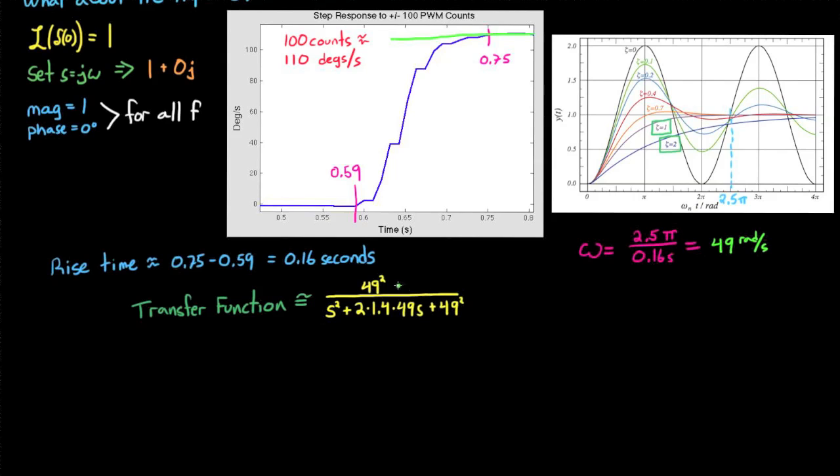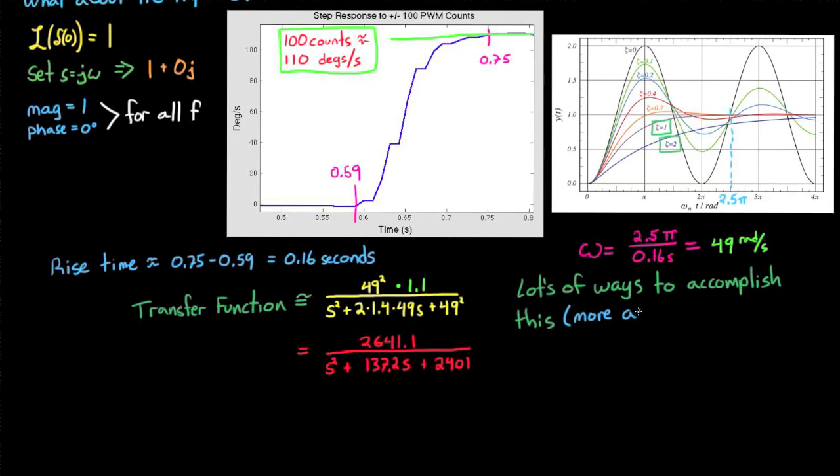Of course, we also have to add a gain to this of 1.1 to account for going from counts to degrees per second. And so there you have it, a second order transfer function that can approximate our system from PWM inputs into degrees per second output. Now I just want to stress that there are a lot of different ways to generate a model for our system. And most of them are probably more accurate than this method. But this is a good starting point for a model that we can expand on in future videos.